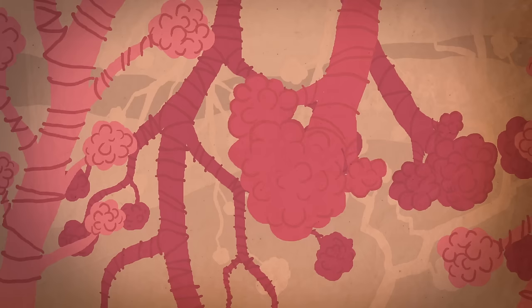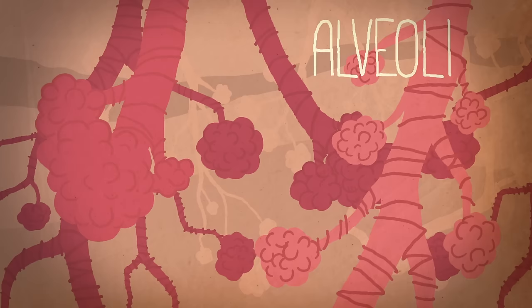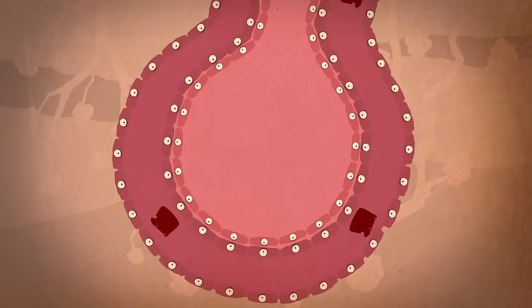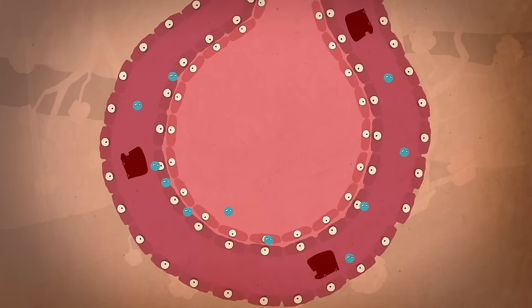Luckily, our lungs' architecture ensures that very little oxygen is wasted. Their interior is divided into hundreds of millions of miniature balloon-like projections, called alveoli, that dramatically increase the contact area to somewhere around 100 square meters.